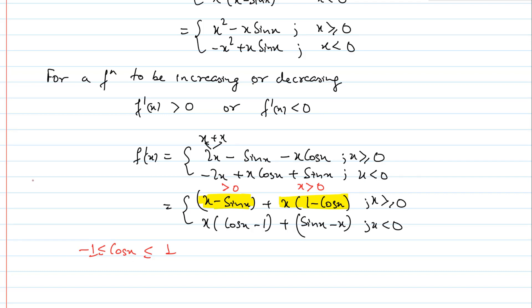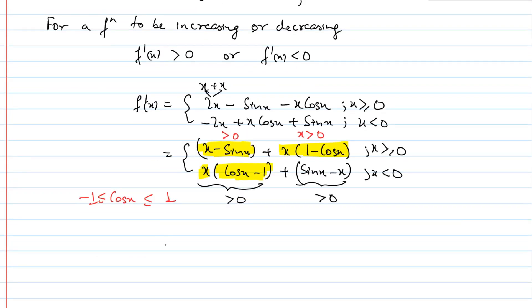Similarly, x < 0 के लिए check करते हैं: (cos(x) − 1) negative आएगा, और multiply by x जो negative है, तो overall positive हो जाएगा। और (sin(x) − x) भी positive रहेगा। तो हम बोल सकते हैं कि f'(x) ≥ 0 — this will imply strictly increasing graph आ रहा है।